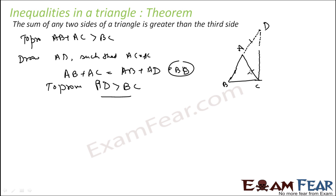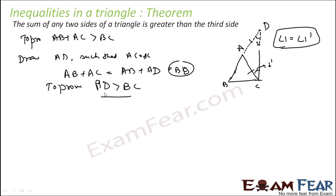Since AC is equal to AD, triangle ADC is isosceles. Let angle 1 be the base angle at C and angle 1' be the base angle at D — they are equal. Now to prove that BD is greater than BC, let's look at the angles.